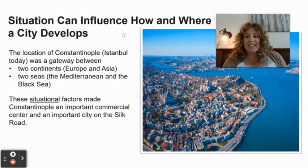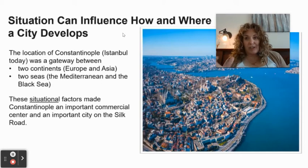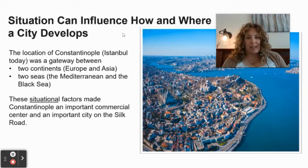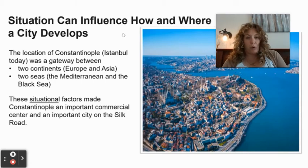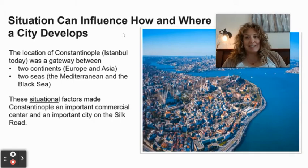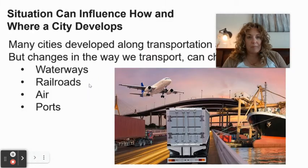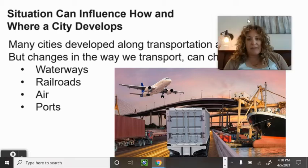The location of Constantinople — which is Istanbul today — is the gateway between Eurasia, Europe and Asia, and is centered between the Mediterranean and Black Sea. Those situational factors make it incredibly important along the Silk Road historically, and it is literally the crossroads of Europe and Asia still today.